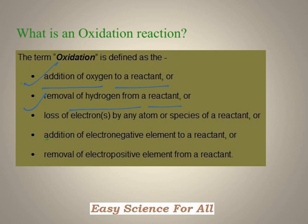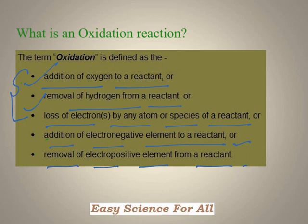The other three criteria for categorizing a chemical reaction as an oxidation reaction are: loss of electron by an atom or a species of a reactant, or addition of electronegative element to a reactant, or removal of electropositive element from a reactant. If we see any of these characteristics during a chemical reaction, then we can call that reaction as an oxidation reaction. Now we will try to understand the first three characteristic features with the help of some examples, while the remaining two you will be studying in your senior classes.